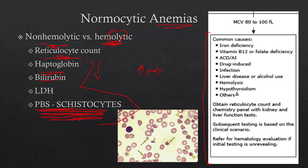One of the gold standards for hemolysis is seeing schistocytes on the peripheral blood smear. A schistocyte is literally a sheared red blood cell — it's broken open. The definition to impress your pathology preceptor: an RBC with two sharp ends and no central pallor. You can see a sharp end here and here, and there's no central pallor — that's a schistocyte.